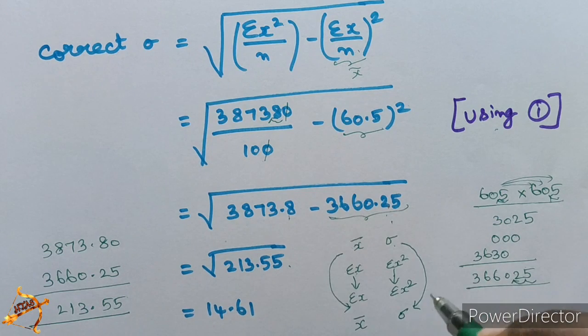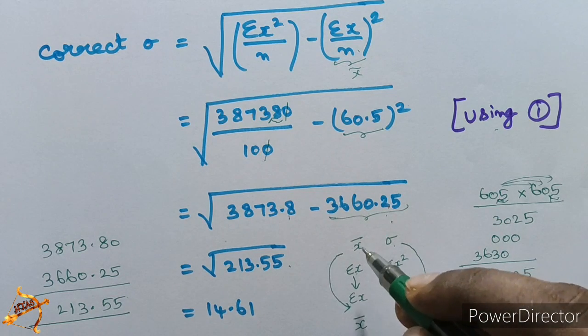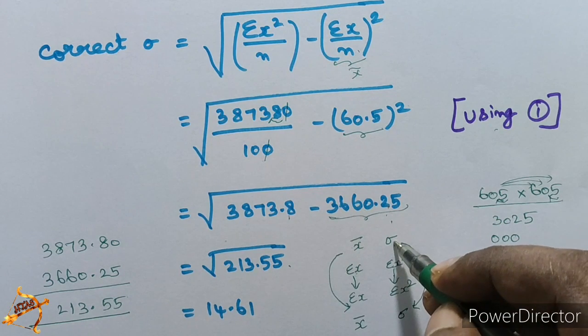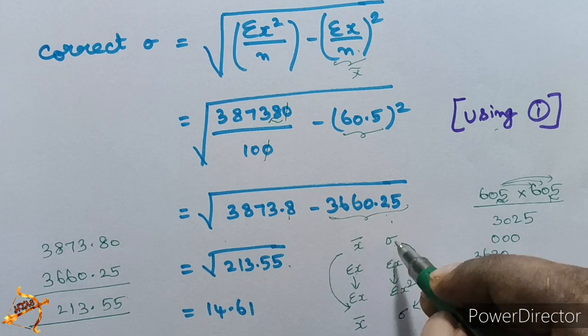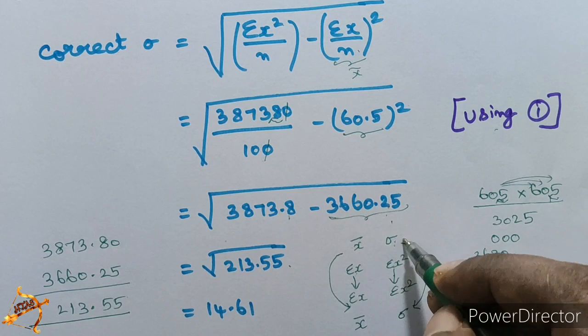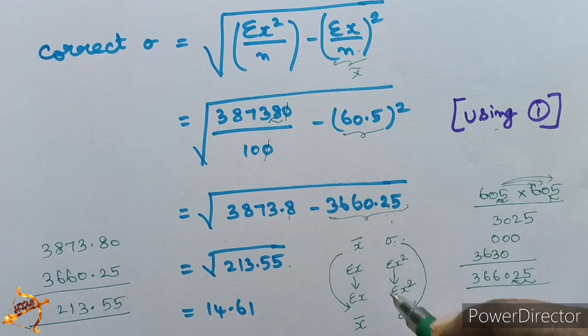So the final answers are: correct mean x̄ = 60.5, and correct standard deviation σ ≈ 14.61. These are the correct mean and standard deviation for the given data.